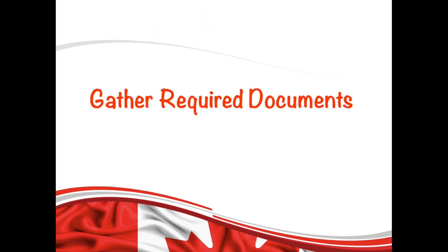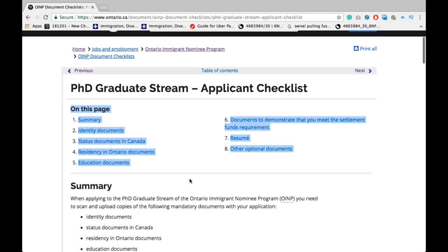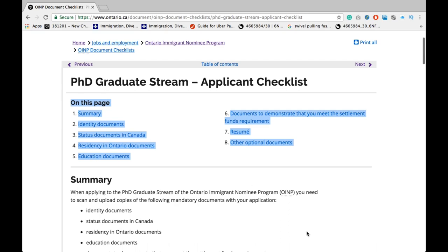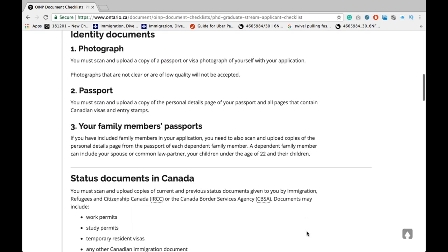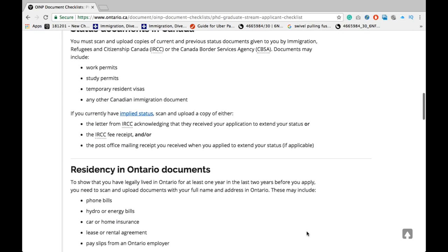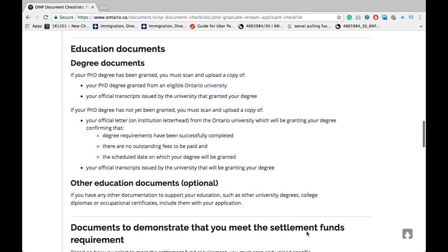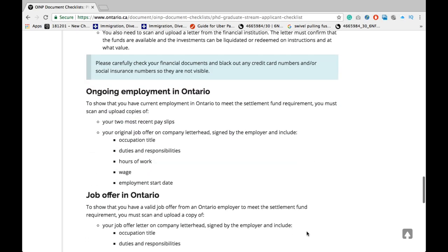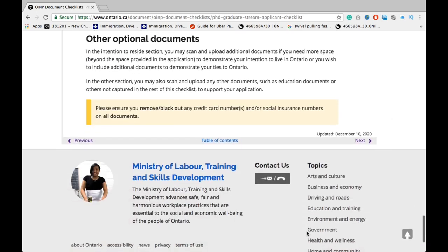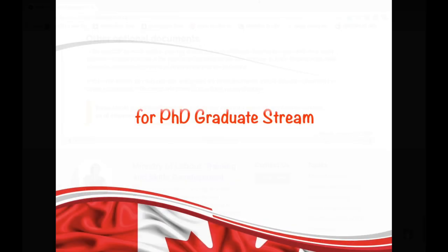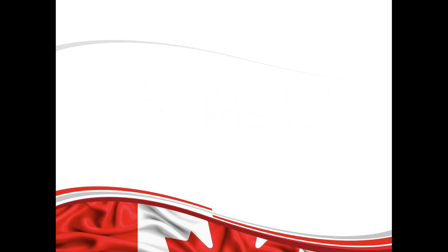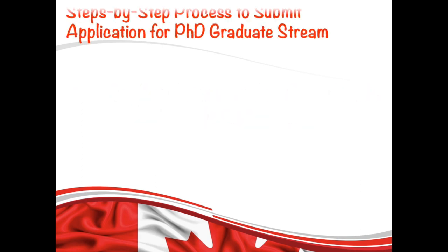At this point, you should have all your documents gathered. The list of required documents is shown here, and the link is given in the description box below. Once you have gathered all the documents, your next step is to register and submit an application under this stream.